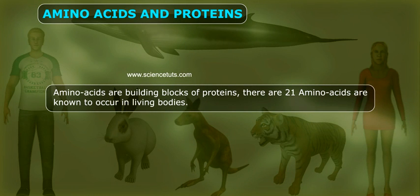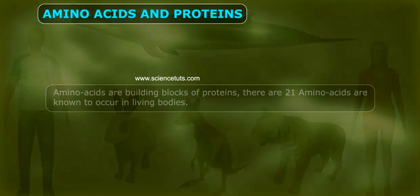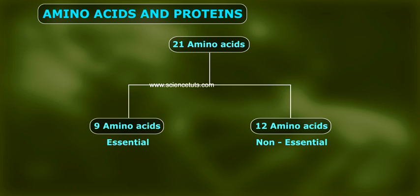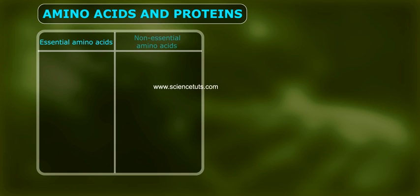Amino acids are the building blocks of proteins. There are 21 amino acids known to occur in living bodies. Out of 21 amino acids, 9 amino acids are synthesized from diet — these are called essential amino acids. The remaining 12 amino acids are called non-essential amino acids.